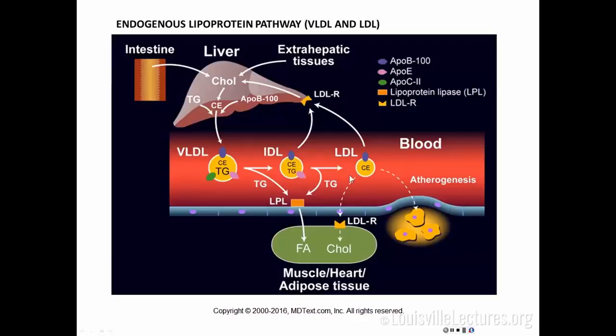The atherogenic pathway is not through the LDL receptor — these are taken up through a different pathway. That is why, as you accumulate LDL in LDL receptor defects, you will accumulate cholesterol in macrophages, blood vessels, and other sites where it can cause atherosclerosis. We know of defects in LDL receptors, and we also know that increased synthesis of ApoB and VLDL causes combined hyperlipidemia, with excess of both triglycerides and cholesterol.